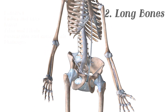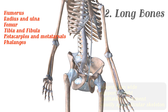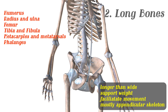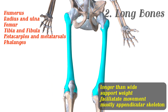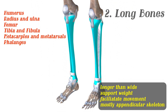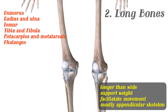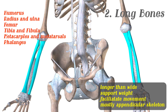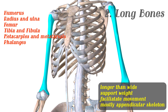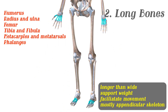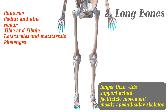The second type is the long bones. These are longer than they are wide. They typically support weight, like your femur, your tibia, and your fibula. They also facilitate movement, like your radius, ulna, and your humerus. You also find them in your metacarpals, metatarsals, and your phalanges.